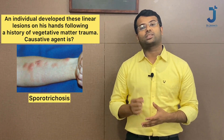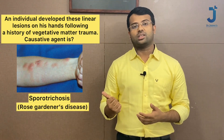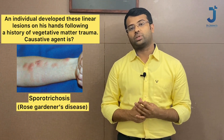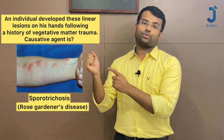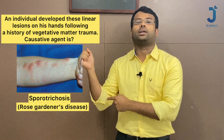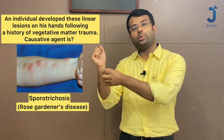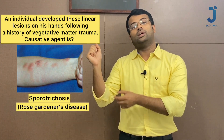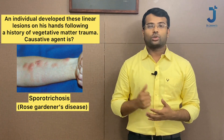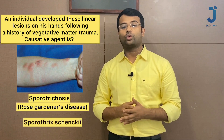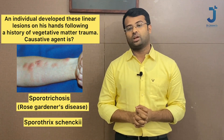The diagnosis is a deep fungal infection called sporotrichosis, also known as rose gardener's disease. Due to traumatic implantation, the fungus invades the lymphatics and spreads along them, producing a linear pattern called the sporotrichoid pattern. The right answer is Sporothrix schenckii, the causative organism.